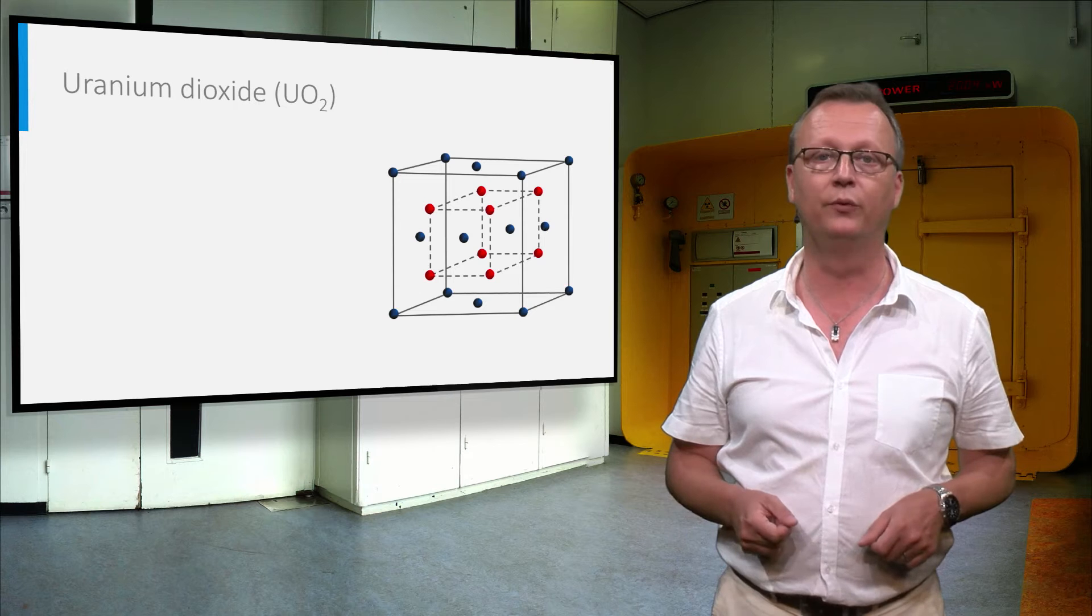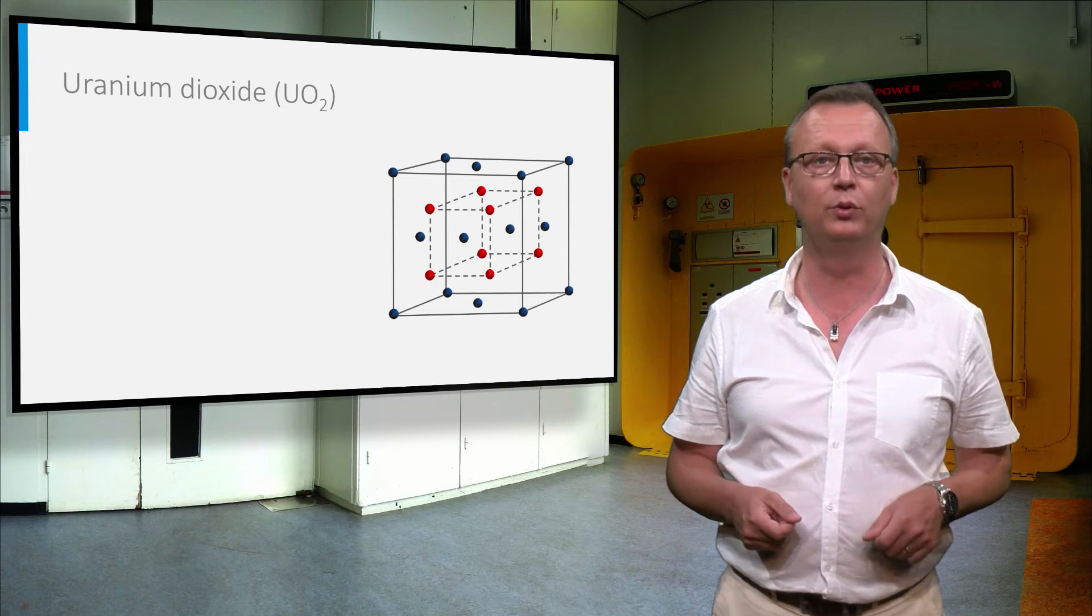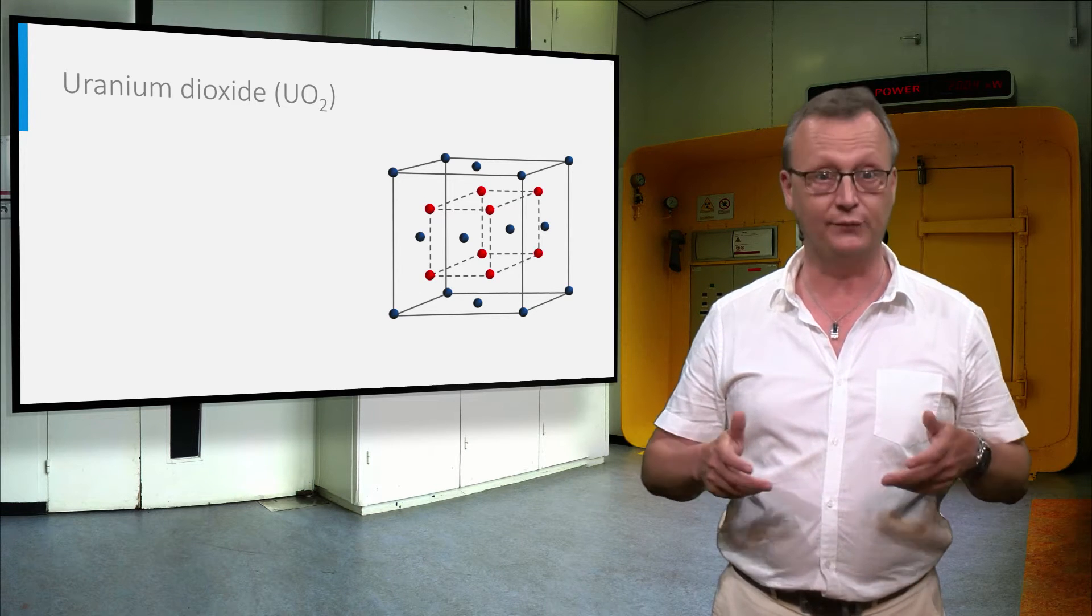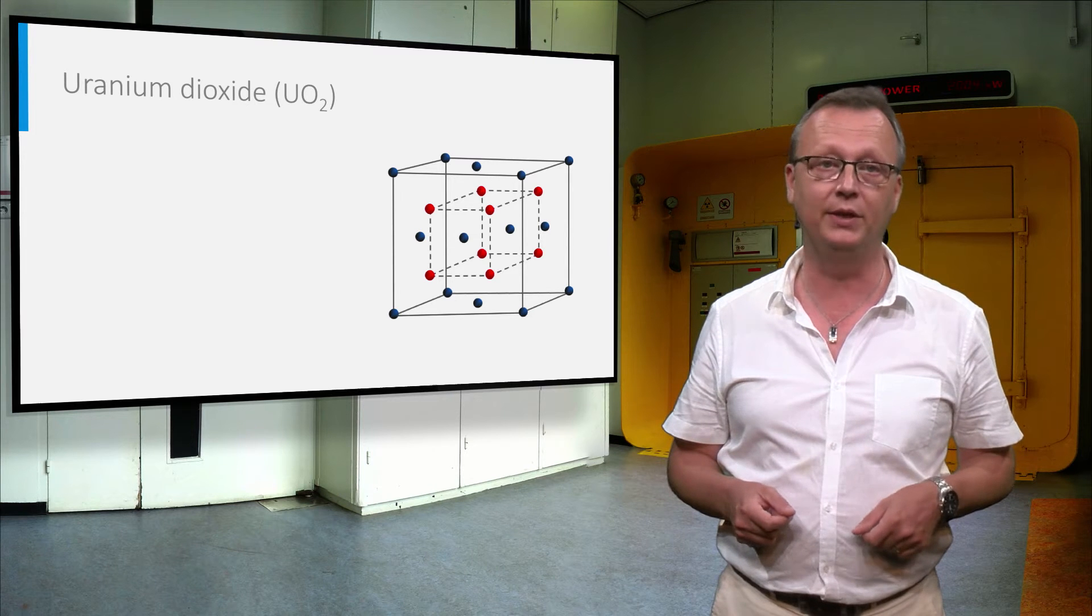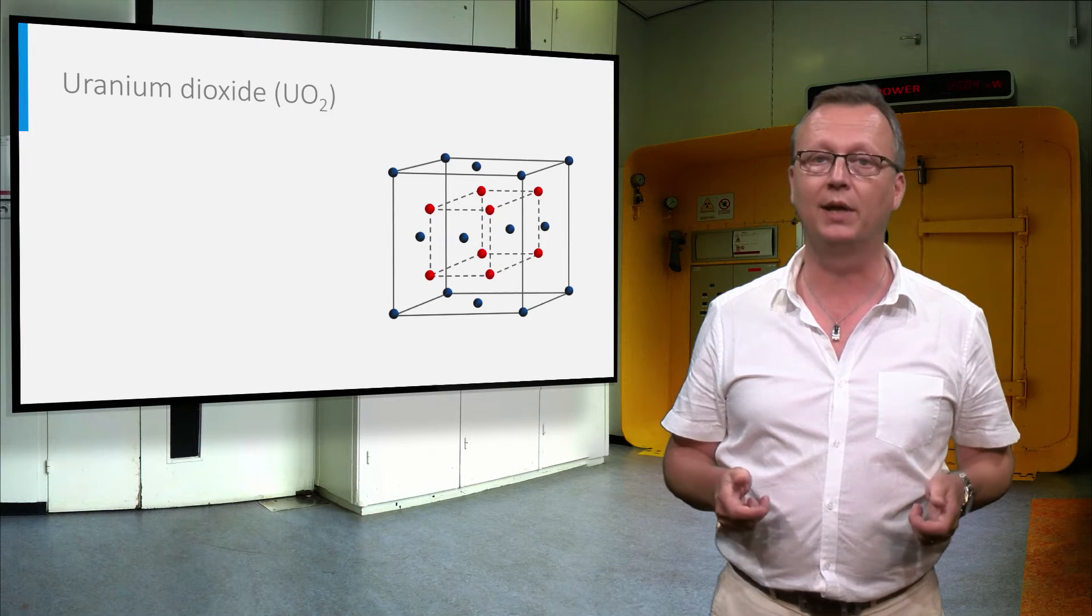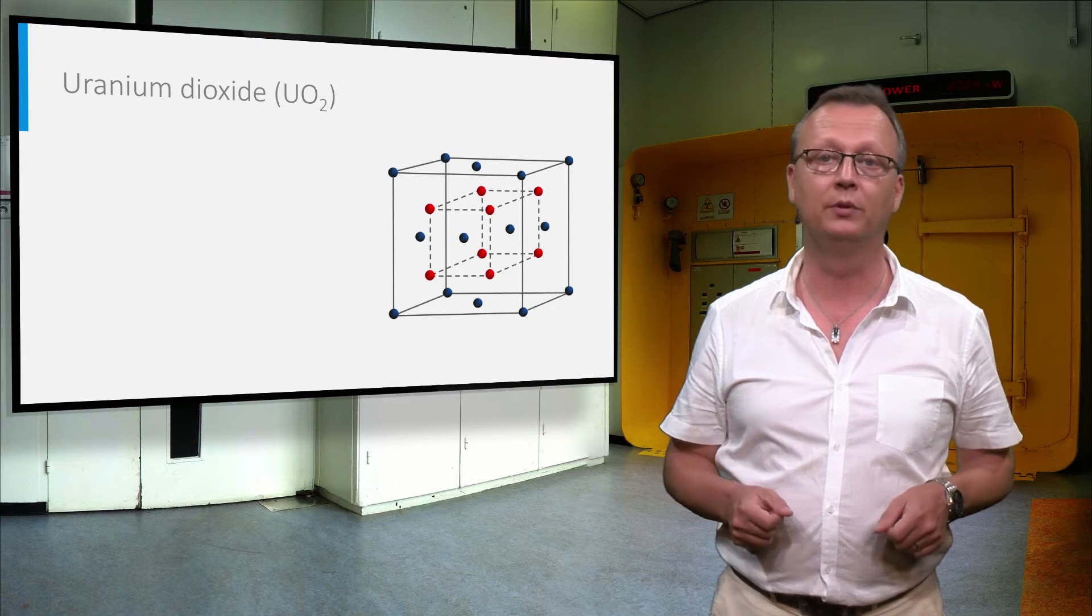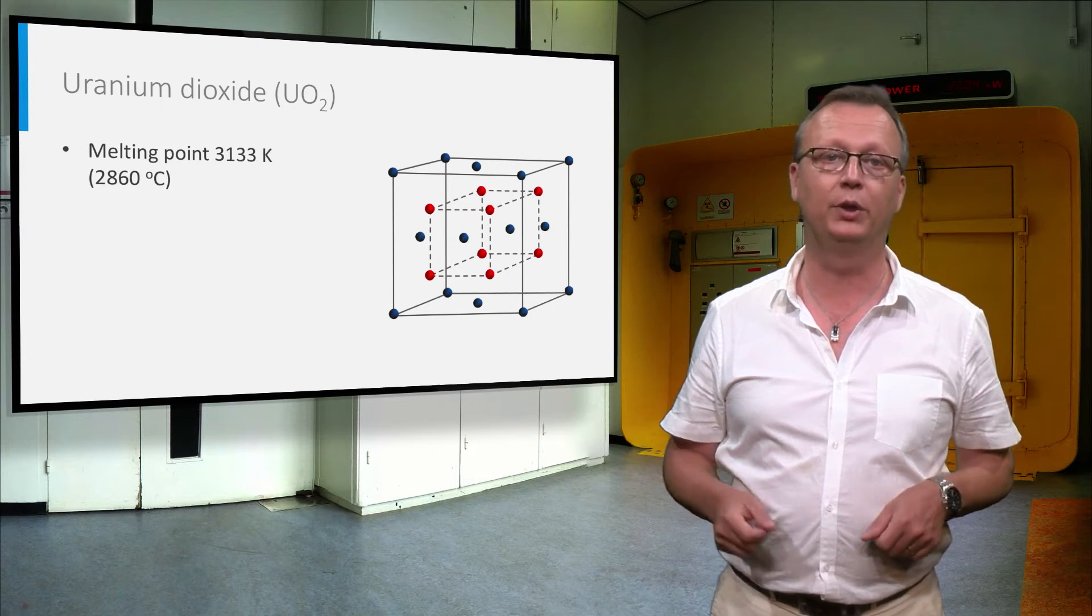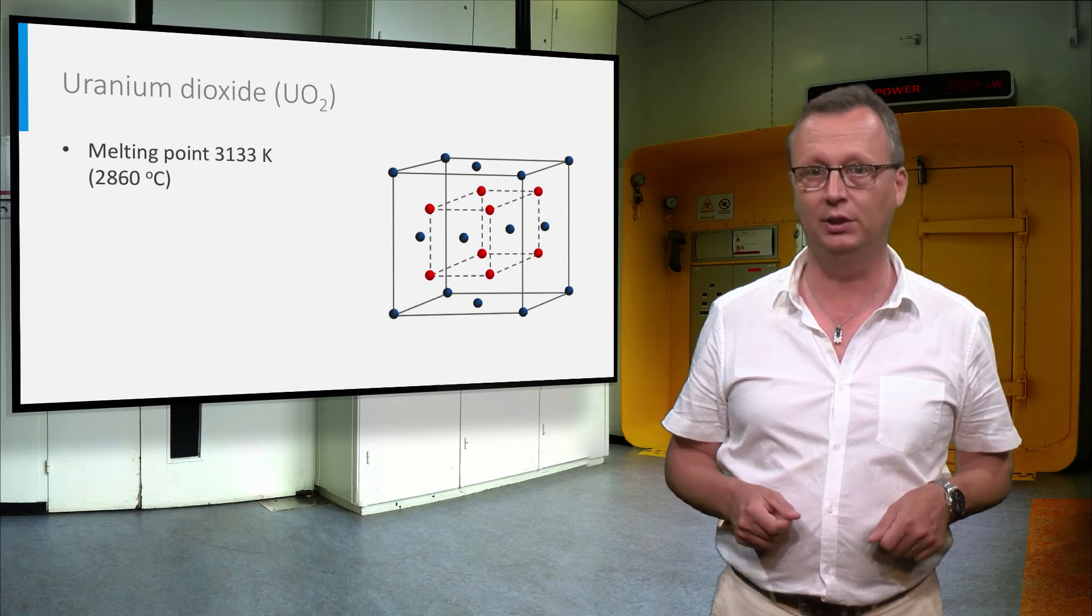Uranium dioxide is one of the most important compounds in the nuclear fuel cycle. It is found as the mineral uraninite in nature and it is the fuel of most nuclear reactors. Uranium dioxide is an extremely stable compound. It melts at a very high temperature of 2860°C.